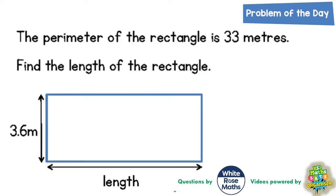Welcome, problem solving fans, to another problem of the day. And this one is all about working in reverse. When we know that the perimeter of the rectangle is 33 metres, we need to figure out the length of the rectangle.